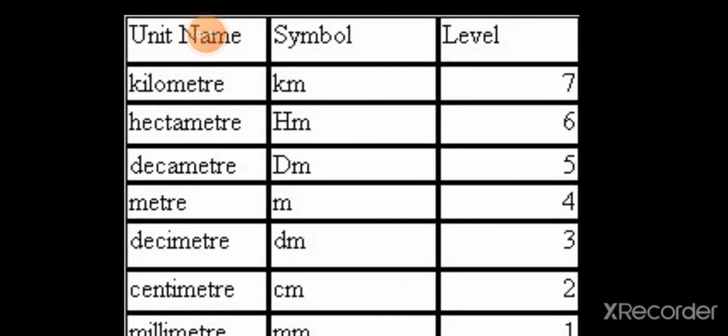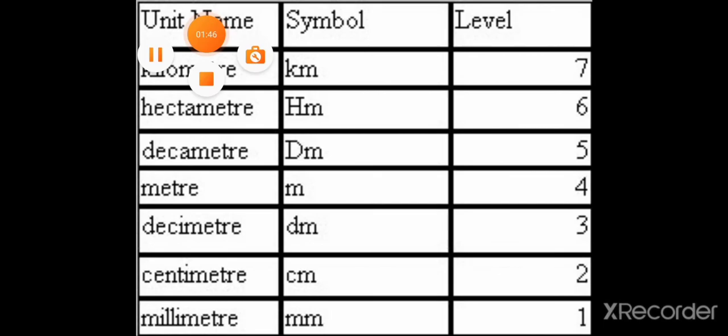Next, we will learn about how to convert centimeters into millimeters. Centimeters means cm, millimeters means mm. The key fact: one centimeter is equal to ten millimeters.